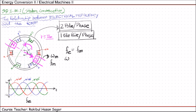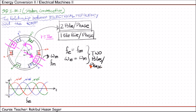Hence we can write: ωe (electrical speed in radians per second) equals ωm (mechanical speed in radians per second), where mechanical speed means the speed of this rotating magnetic field. This is for the two-pole-per-phase case. We will see what happens if we have a higher number of poles per phase later on, but for this configuration we understand that for two poles per phase the speed of the rotating magnetic field is exactly equal to the supply frequency.